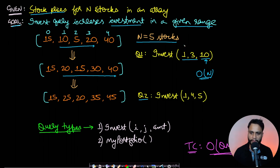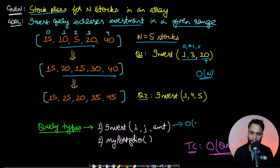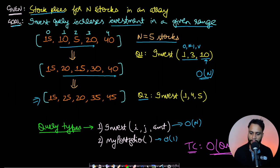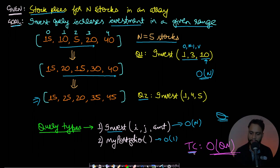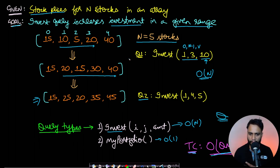Each invest query takes O(n) time because in the worst case you might get an invest query from index 0 to n-1, requiring iteration through the entire array. The get-portfolio query is O(1) since the array is already present. If you have q queries and all are invest-type queries, the total time complexity becomes O(q × n).